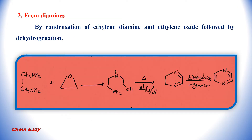In the third method, pyrazine can be synthesized from diamines. In this method, ethylenediamine on condensation with ethylene oxide produces an open-chain compound. This undergoes cyclization and produces dihydropyrazine. Dihydropyrazine on dehydrogenation produces pyrazine finally.